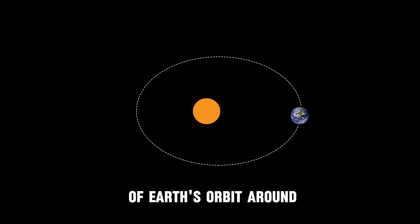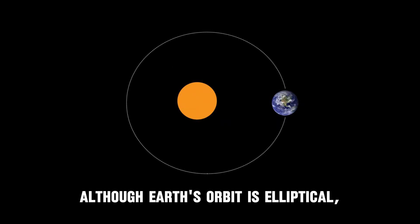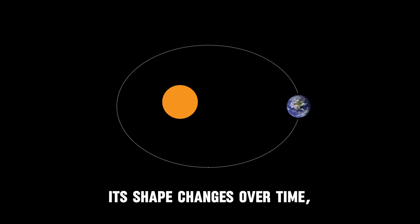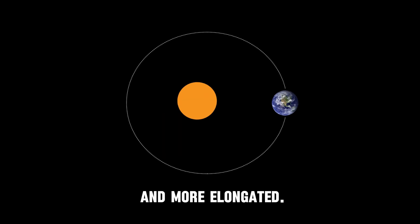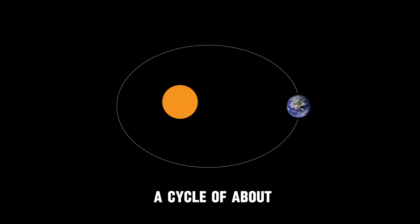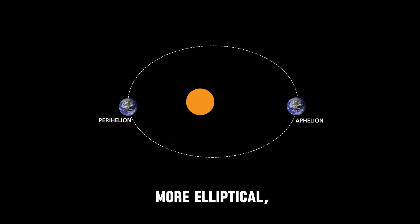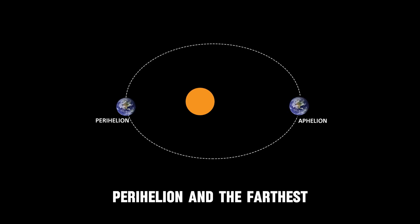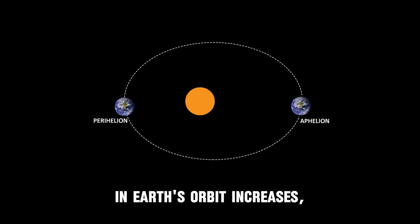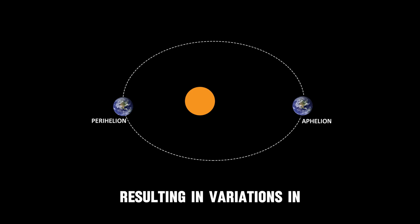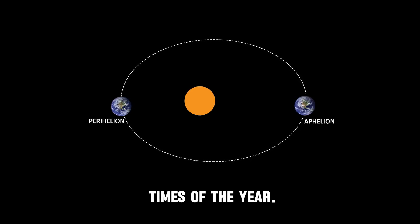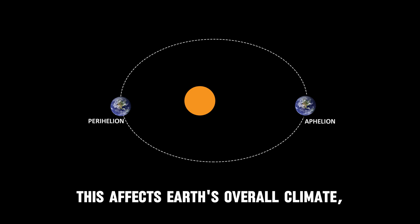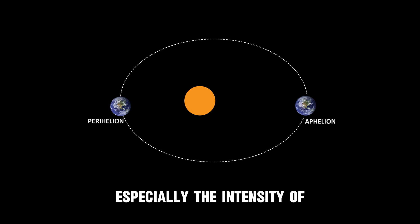Eccentricity refers to the shape of Earth's orbit around the Sun. Although Earth's orbit is elliptical, its shape changes over time, fluctuating between more circular and more elongated. These changes occur over a cycle of about 100,000 years. When the orbit is more elliptical, the difference between the closest point, perihelion, and the farthest point, aphelion, increases, resulting in variations in the amount of solar energy Earth receives at different times of the year. This affects Earth's overall climate, especially the intensity of the seasons.